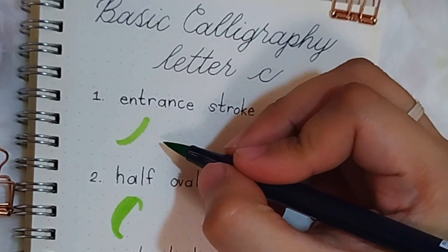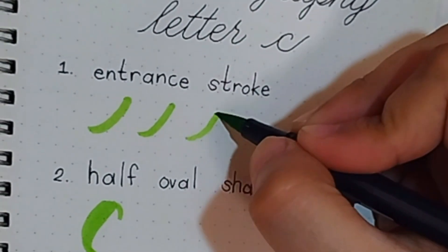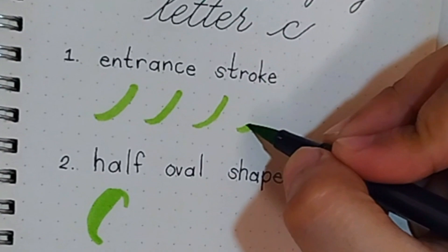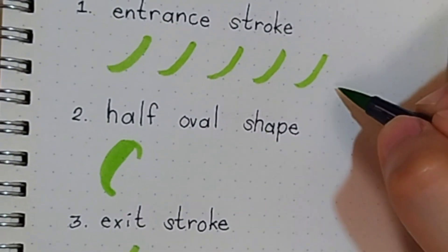Basic calligraphy tutorial letter C. Let's start with a simple entrance stroke. Put light pressure on your pen and do upward strokes to achieve a thin line.